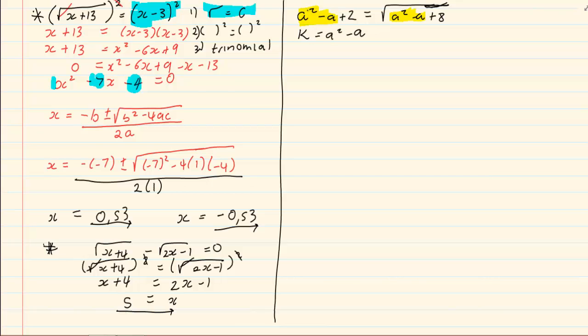So you make k is equal to a squared minus a. Then we use substitution. So wherever a squared minus a is, I am taking it out and I am going to put k plus 2 is equal to the root of k plus 8. Now, you will notice that I have a root sign. So I am going to use the root sign method to solve for k.